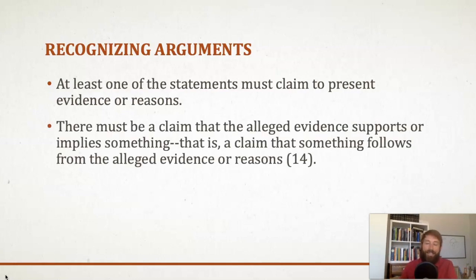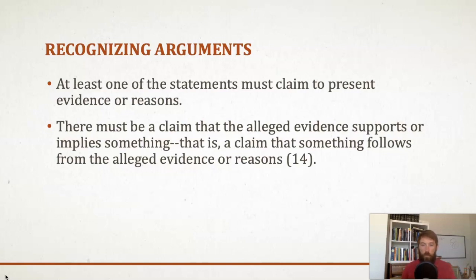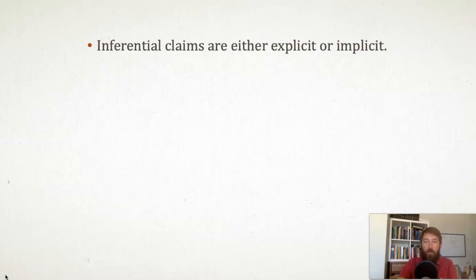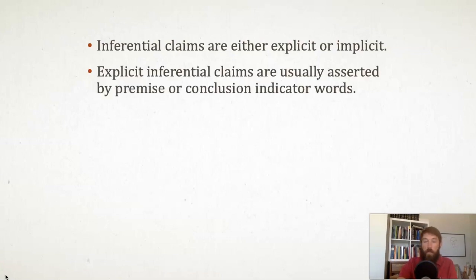There also is a second condition that must be met. There has to be some kind of claim that the alleged evidence supports or implies something. Sometimes this is called the inferential claim. Premises are the evidence or the reasons, and the inferential claim — this second condition — is what the premises do: they support the conclusion. Those are the two conditions that must be met. You've got to have a factual claim and an inferential claim. These inferential claims can be either explicit or implicit, and whether they are explicit or implicit depends on whether or not indicator words are used.